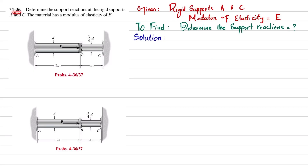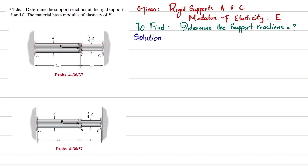Welcome back. Problem 4-36: determine the support reactions at rigid supports A and C. The material has modulus of elasticity E. There are two step rods connected at point B, and C and A are rigid supports, meaning they do not allow any translatory motion. There is a point load at point B, so you have to find the reaction forces offered by the rigid supports at C and A.